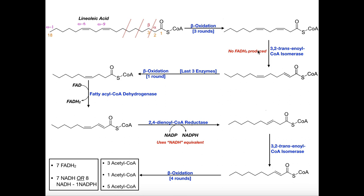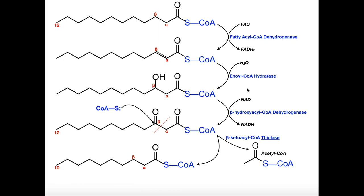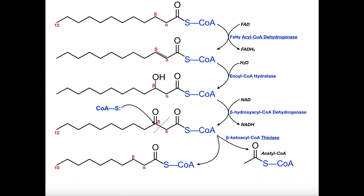Now we have this double bond and we can proceed with beta-oxidation as normal. We're going to perform the last three enzymes of this round of beta-oxidation — only the last three enzymes because we didn't need the dehydrogenase first. We cut right here and get off one acetyl-CoA. So we've now produced four, and we have effectively shortened the chain by two carbons.